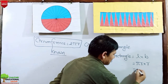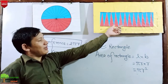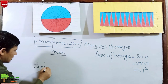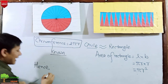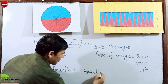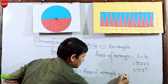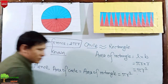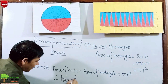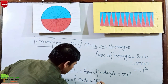Pi is π r into r, r squared. The area of this rectangle is equal to the area of this circle. Hence, the area of this circle is equal to the area of this rectangle, which is equal to pi into r squared — pi r squared. Therefore, the area of a circle is equal to pi r squared.